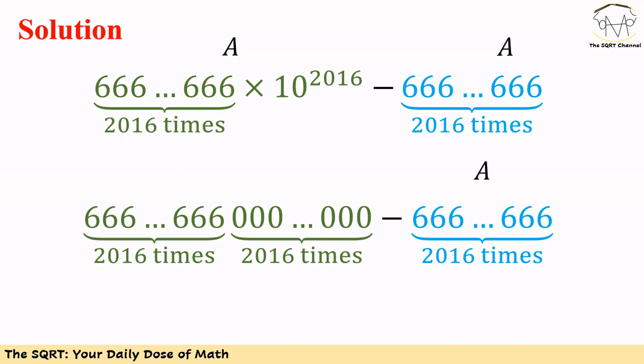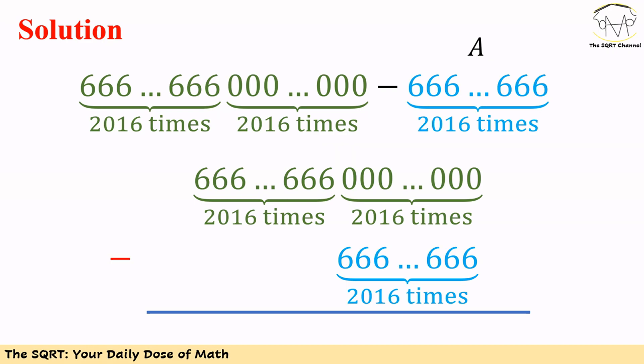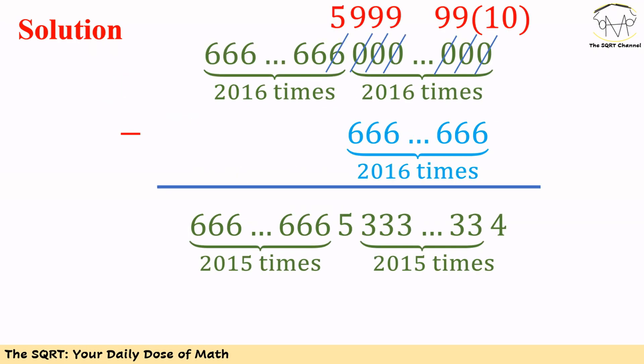To do the subtraction, we are going to use the long subtraction method. We put one number under the other, then start from the rightmost digit and calculate. When we do this, we can see that for the first digit in the result we are going to have 4.